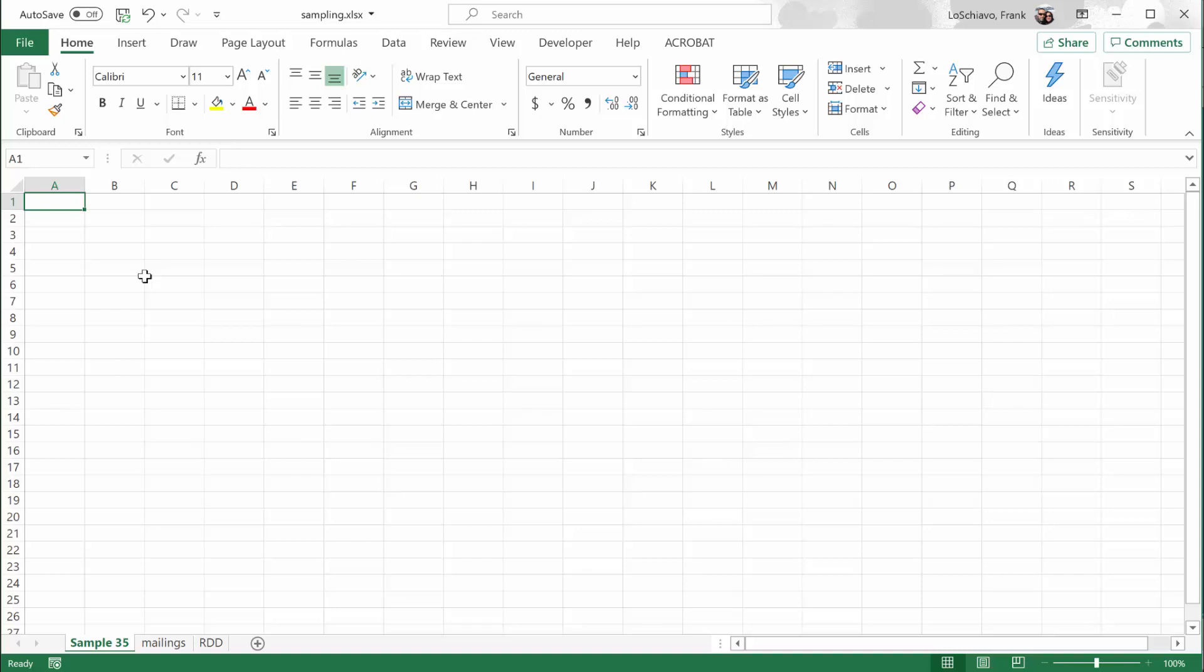All Excel functions begin by typing in an equal sign. I'm going to start typing in that function name, Rand between. Once I've got that function name typed in, I need to open up a parenthesis. Excel is asking me now, what's the bottom number? What's the lowest number you want to select from? We're going to put in a one, then I put a comma.